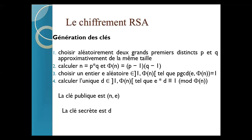Quand on retrouve la clé publique qui est N et E, de l'autre côté vous avez la clé secrète qui est D. Automatiquement, si vous connaissez N et E, on a vu que mathématiquement il y a une relation entre E et D. Sauf que dans la pratique, il est difficile de trouver le D à partir de E.